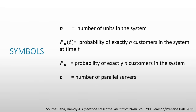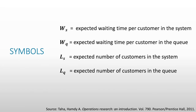And C would be the number of parallel servers. There are four more symbols we use. W sub S would be the expected waiting time per customer in the system. WQ is the expected waiting time per customer in the queue. WS and WQ are waiting times, so they could be in seconds, minutes, or hours. Then we have L sub S, which is the expected number of customers in the system. And L sub Q, which is the expected number of customers in the queue. L sub S and L sub Q are counts of customers, so they would be integer values.